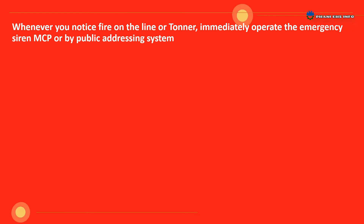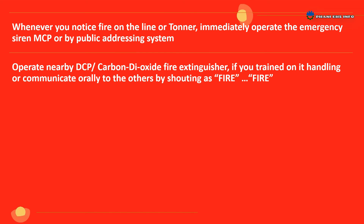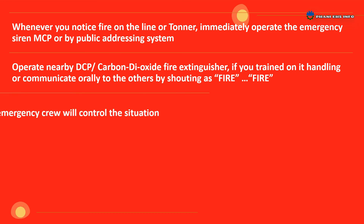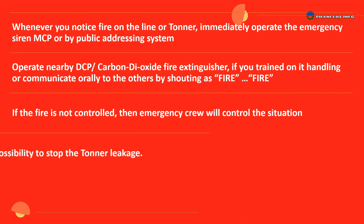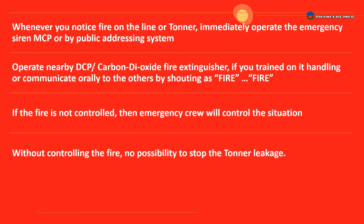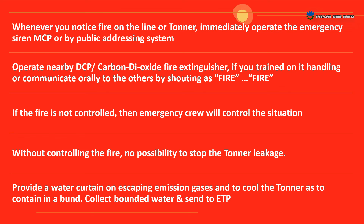Whenever you notice fire on the line or tonner, immediately operate the emergency siren MCP or by public addressing system. Operate nearby DCP or carbon dioxide fire extinguisher if you are trained in its handling, or communicate orally to others by shouting 'Fire!' If the fire is not controlled, the emergency crew will control the situation. Without controlling the fire, there is no possibility to stop the tonner leakage. Provide a water curtain on escaping emission gases and to cool the tonner, containing within a bund. Collect bounded water and send to ETP.